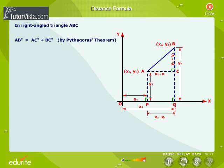Using the Pythagoras theorem, we get AB² = AC² + BC², that is equal to (x2 - x1)² + (y2 - y1)², which implies that AB is equal to the square root of (x2 - x1)² + (y2 - y1)².